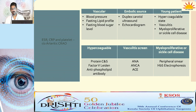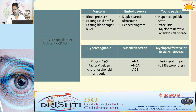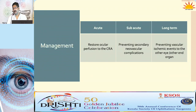For vascular causes, check blood pressure, fasting lipid sugars, and lipid profile. To look for embolic source, do carotid ultrasound or echocardiogram. For young patients, look for hypercoagulable states: protein C, protein S, Factor V Leiden mutations, and antiphospholipid antibody. To rule out vasculitis, do ANA, ANCA, or ACE levels. Rule out myeloproliferative disorders with peripheral smear and hemoglobin electrophoresis.